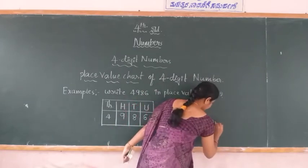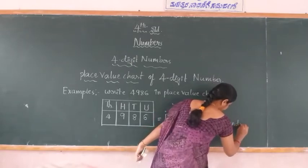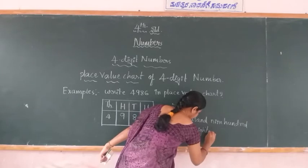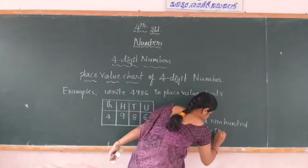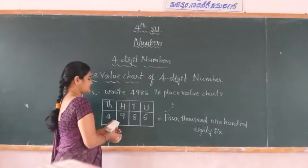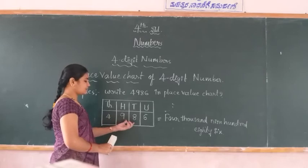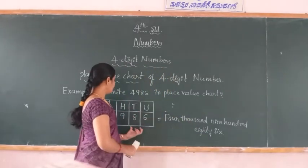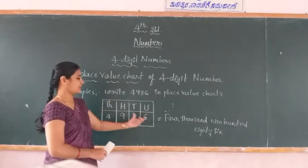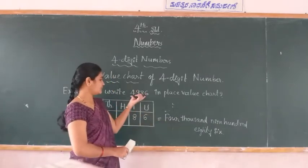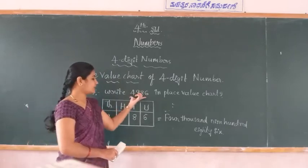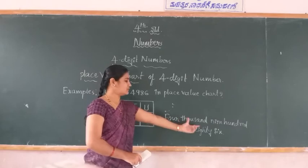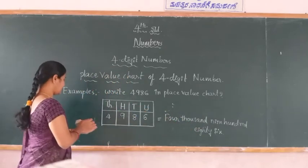This is the word form of the 4-digit number. The 4-digit number 4986 in words is four thousand nine hundred and eighty-six. This is the method of writing 4-digit numbers in the place value chart and also in word form. The standard form is 4986.